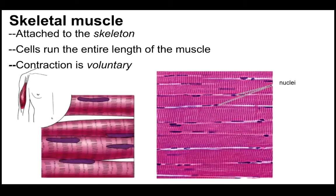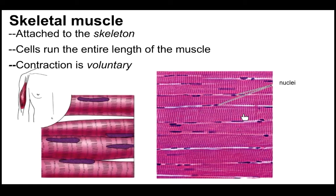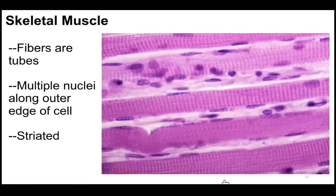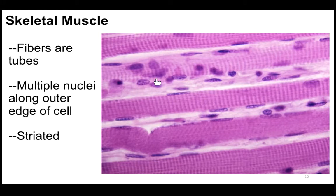For skeletal muscle, you can see why it's the simplest to identify under the microscope — the striations are really clear. The cells are really long and tubular; they just look like rods in longitudinal section. You have multiple nuclei on the edges of the cell. Here you can see the nuclei along the outer edge and the banding patterns, and there appears to be some connective tissue as well.